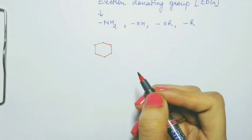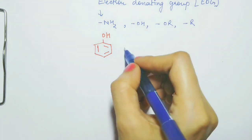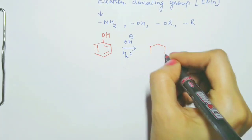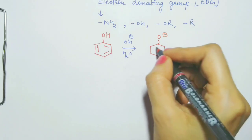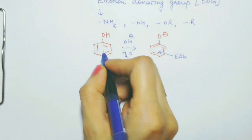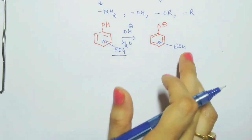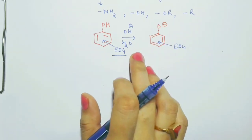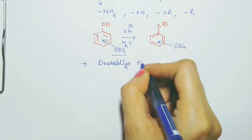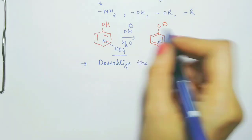What happens when we said that phenoxide ions are more stable? If some electron donating group is present on this phenoxide group, what will happen? When an electron donating group is attached to the phenoxide ion, it releases or donates its electrons to the ring, which will destabilize it — destabilize the phenoxide ion.